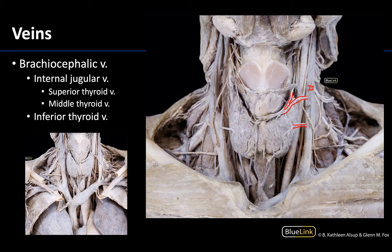The inferior thyroid veins are the largest and are fairly independent. They typically drain into the left brachiocephalic vein, which you can see really well here — you can see those inferior thyroid veins draining directly into the left brachiocephalic vein. However, they can drain into the right brachiocephalic as well; that variation is not uncommon. So you can see that there is a fairly robust venous drainage of these endocrine glands.